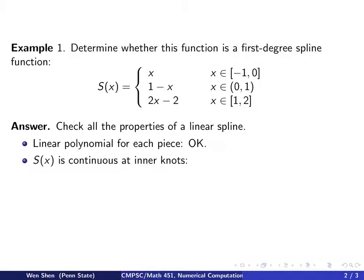Furthermore, the overall function has to be continuous at the inner knots. Let's identify them here. We see 0 is an inner knot between the first and second pieces, and 1 is an inner knot between the second and third pieces. So we need to check if the function S(x) is continuous at those two points.